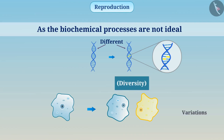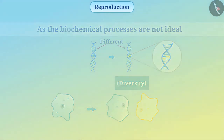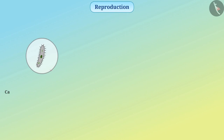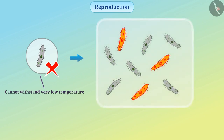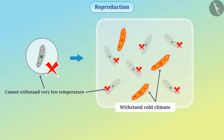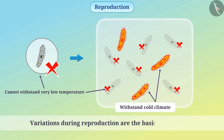Often, some variations are helpful for the protection of the species. If the climate becomes colder, then many bacteria will vanish. During reproduction, it produces some bacteria which can tolerate very low temperature. So we can see how variations are helpful for the survival of species. Therefore, we say that variations during reproduction are the basis of evolution.